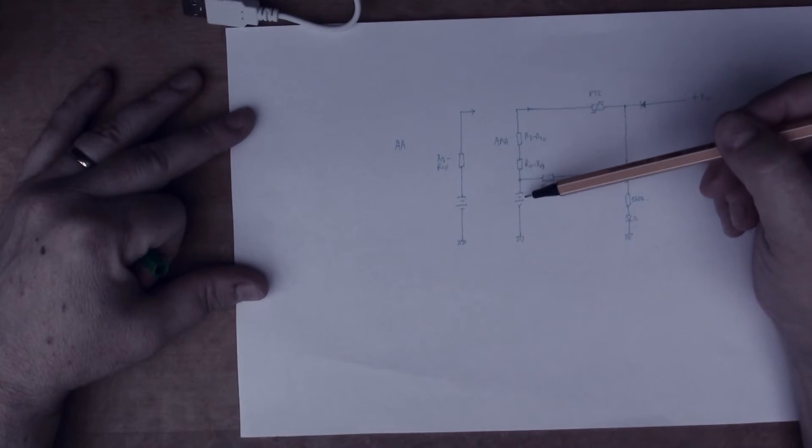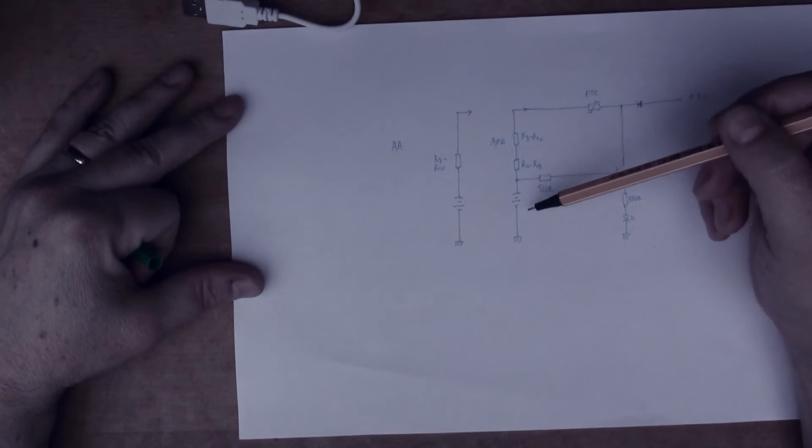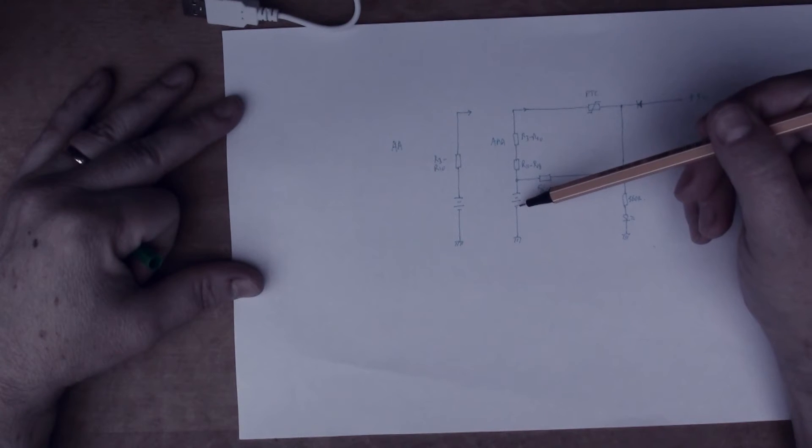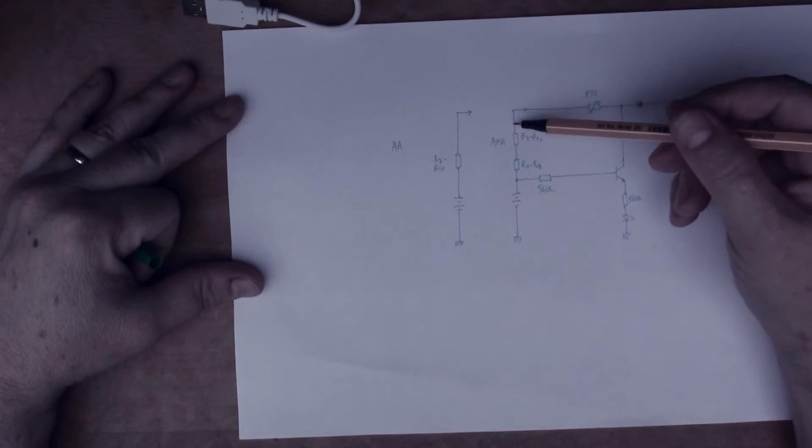So you have the resistor network and then you have the cell under charge here. That's it. It's just basically a resistor in the path of current going into the battery, so this is a pretty small amount of current. I measured about 100 milliamps.